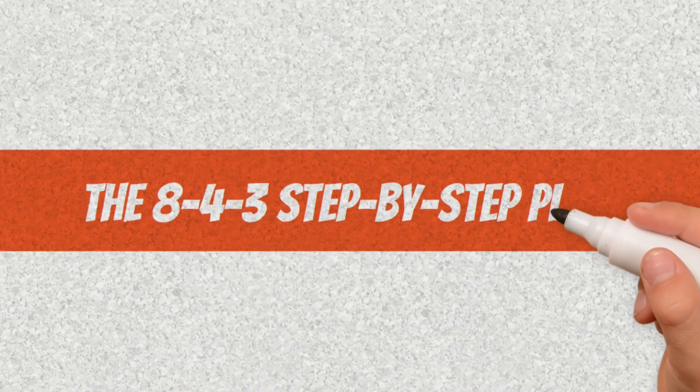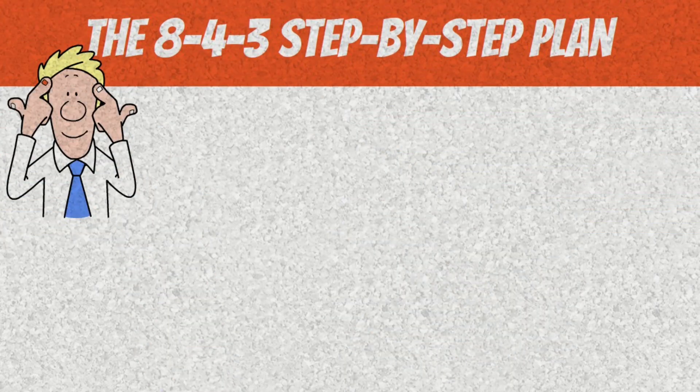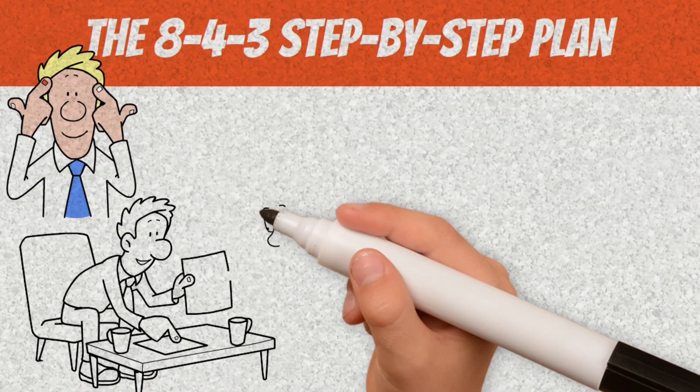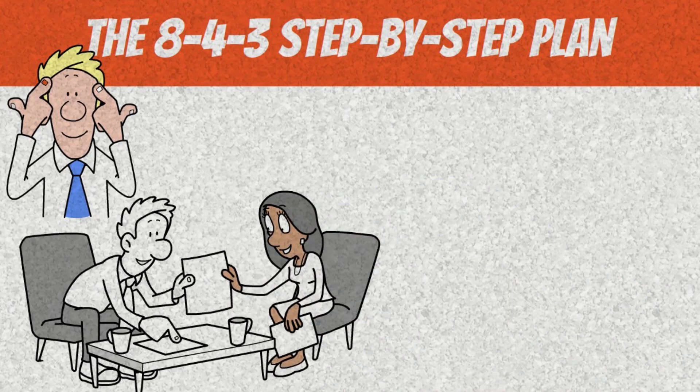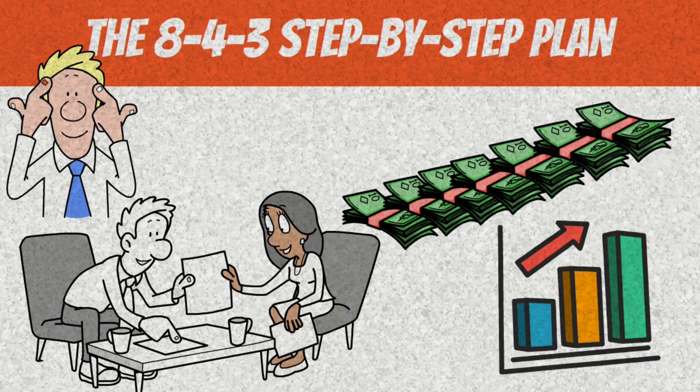The 8-4-3 step-by-step plan. Now that you know how the rule works and the enemies to avoid, it's time to turn this into a practical plan you can start today. The goal here is simple: put your money to work continuously, speeding up the growth cycle until you reach the point where profits exceed your contributions.